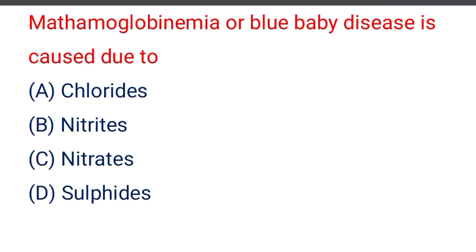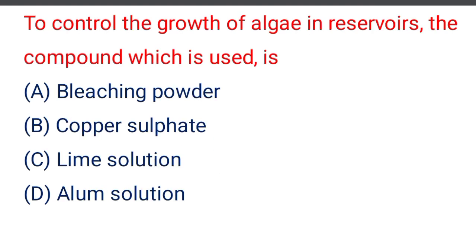Next question: methemoglobinemia or blue baby disease is caused due to — option A chlorides, option B nitrites, option C nitrates, option D sulfites. The correct answer is option C, nitrates.